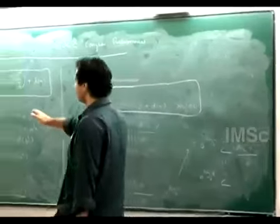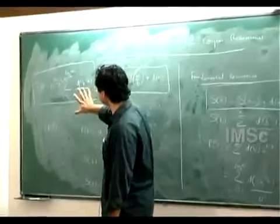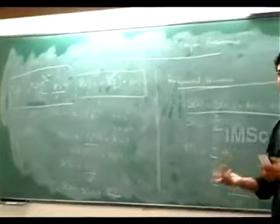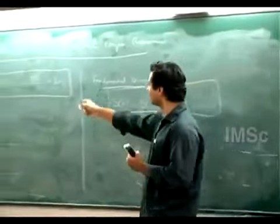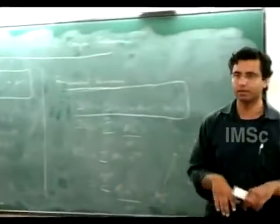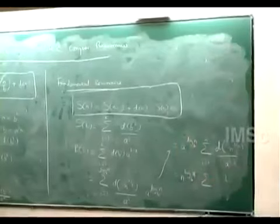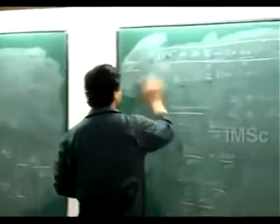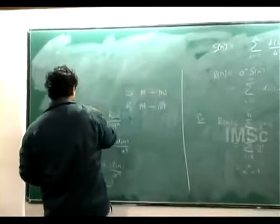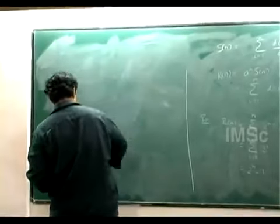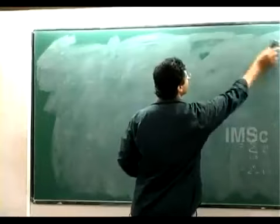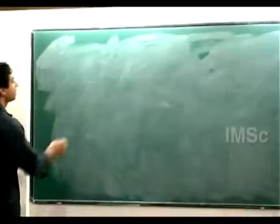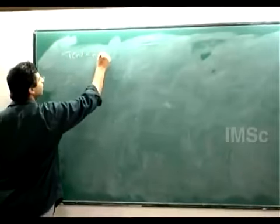As such the formula is a bit hard to remember, but the whole point is we do not want to remember the formula — we just have to remember how to reduce this recurrence to the fundamental recurrence, then do the necessary manipulations to get back the closed form. Let us apply this to some interesting recurrences.